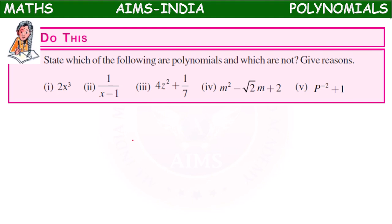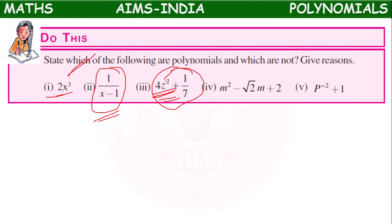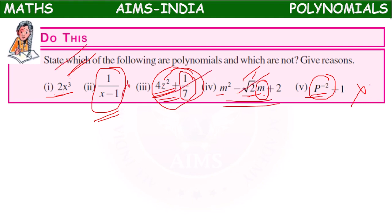Next: state which of the following are polynomials and which are not, give reasons. 2x cubed — it is a polynomial because it has a constant and variable raised to a positive exponent. 1 by (x minus 1) — it is not a polynomial because the variable is in the denominator, giving a negative exponent. The third and fourth expressions are polynomials with positive exponents. p to the power of minus 2 is not a polynomial because of the negative exponent. So the first, third, and fourth are polynomials; the second and fifth are not.